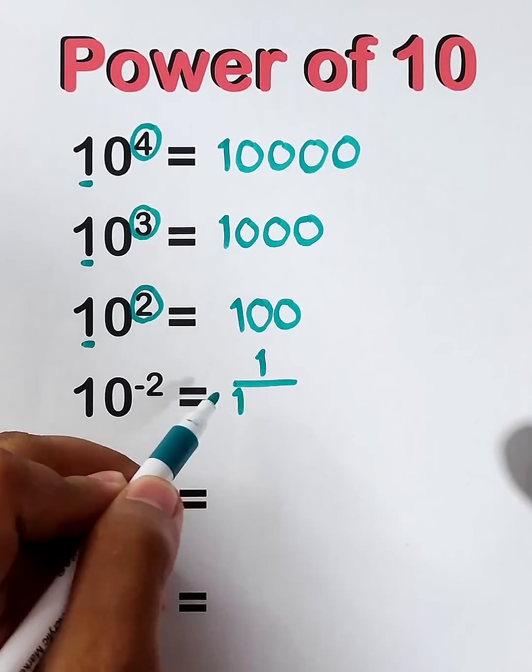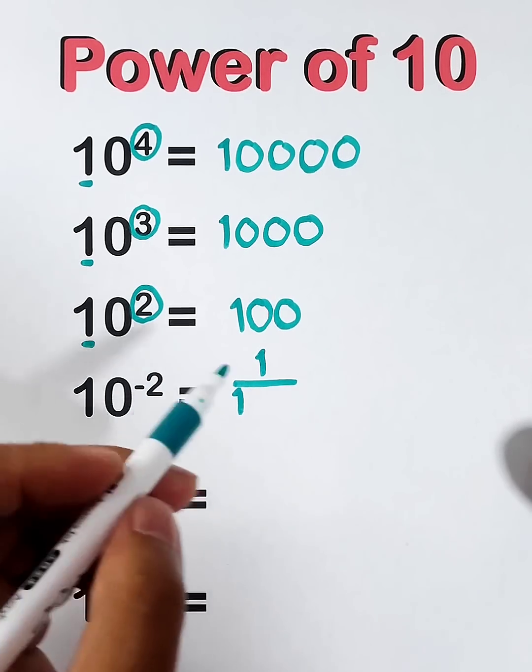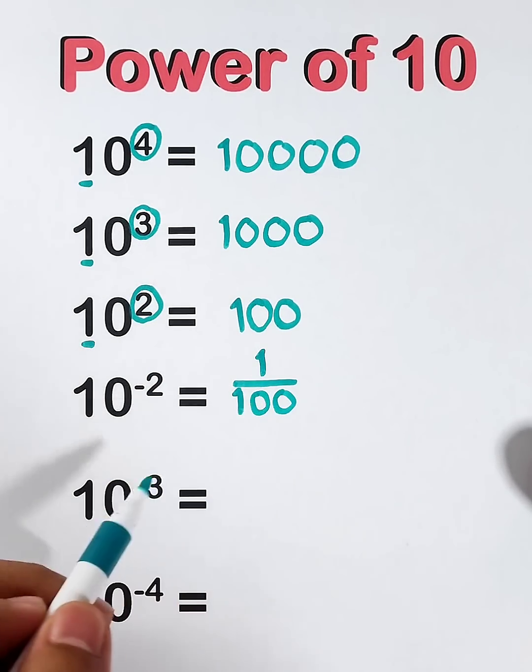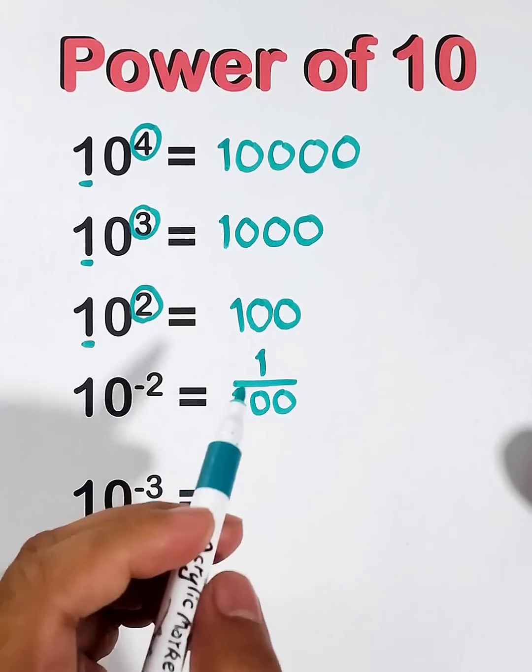We will put here 1, and then count the number of zeros. If this is negative 2, we will put 1 and 2 zeros. And as you can see, our answer for 10 raised to the negative 2 is 1 over 100.